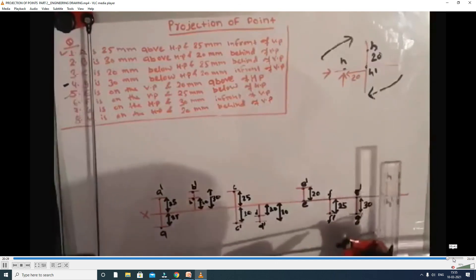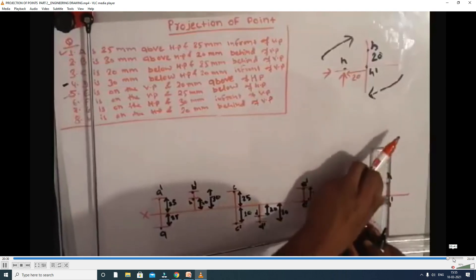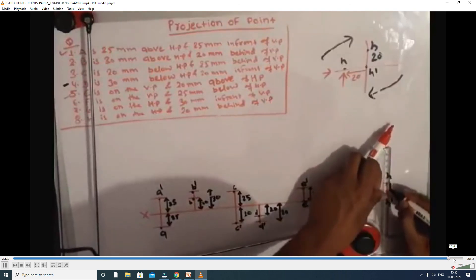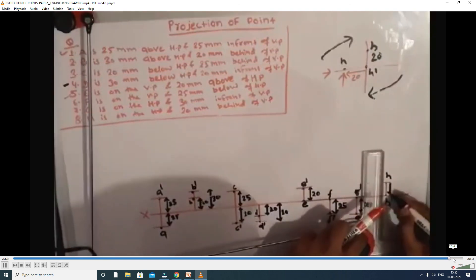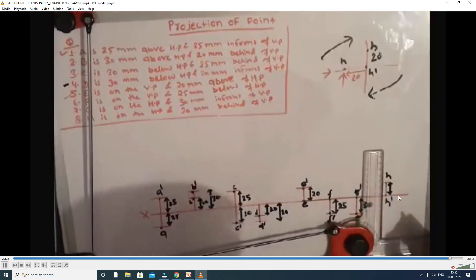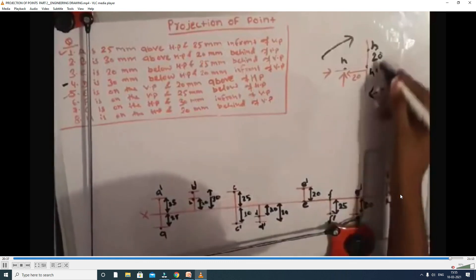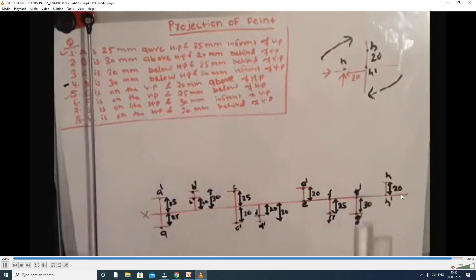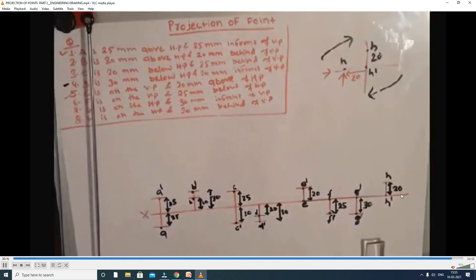Remaining position: both HP and VP. When the point lies on both HP and VP, both the front view and the top view lie on the XY reference line. In this way, we identify the front view and top view for all nine positions.